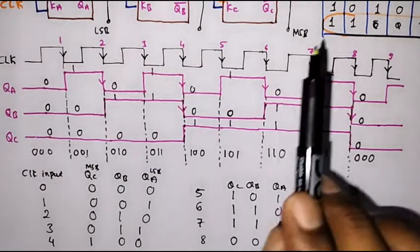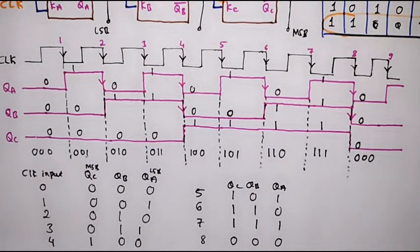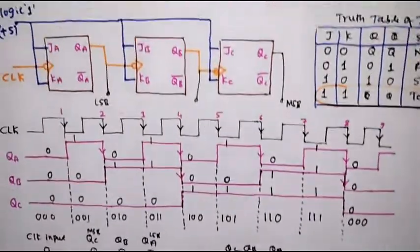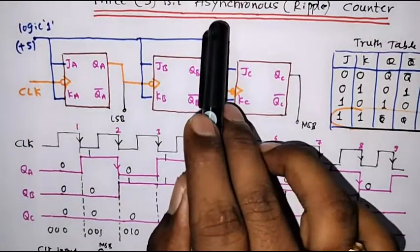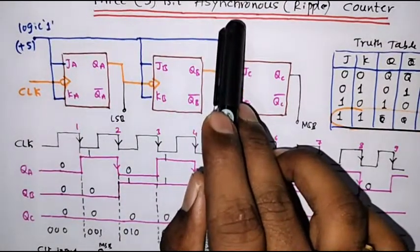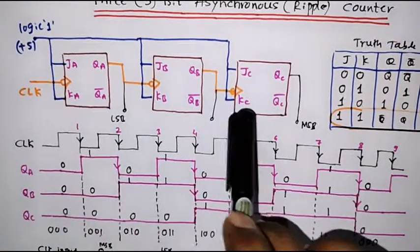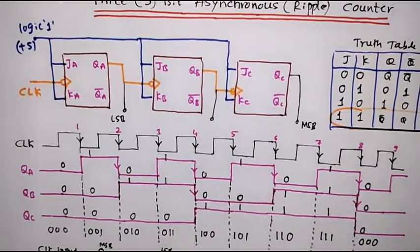Thus the 3-bit counter will count from 0 to 7. In this counter, the clock input is not applied simultaneously to all the flip-flops, so this is called an asynchronous counter. Thank you for watching.